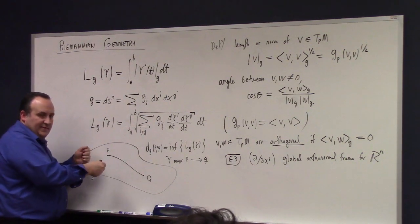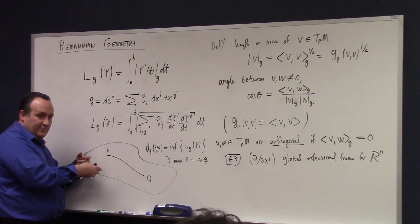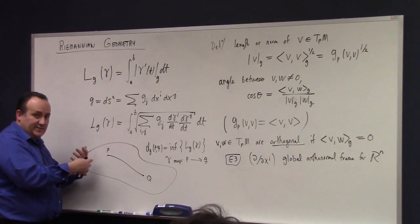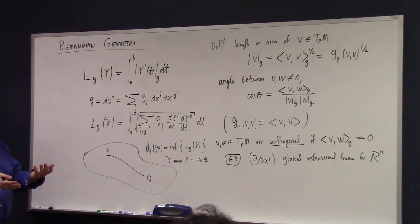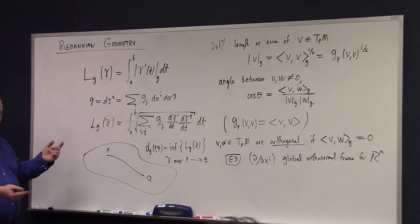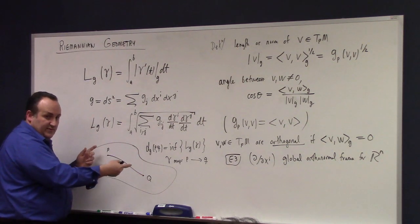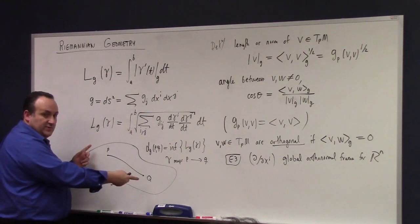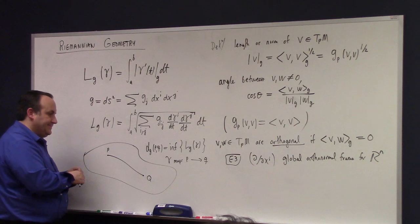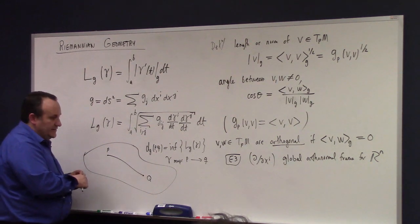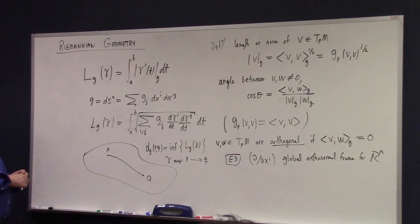And how is that defined? Well, he's got some work to do here, but he eventually tells you that the distance from g, with respect to the metric g, from p to q, is the infimum, inf of l_g gamma, where gamma maps p to q. It's a path from p to q. Mind your p's and q's. I'm sorry, that's horrible.